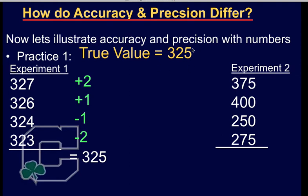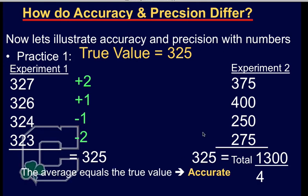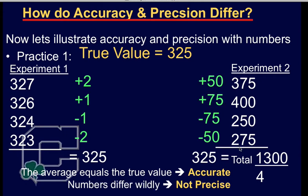But if I did this experiment a second time and I got these numbers, look how far apart these numbers are. Oh my gosh. There's no way those are accurate. But if I add them together and then divide by four, my total still equals the true value. So since the average equals the true value, those are actually accurate numbers. But the problem is they're not precise because of how far apart they are. These ones are precise because they're all clumped together. These ones are not precise because of how far apart they are. Now, the difference in precision and how far away you can be really depends on the size of your numbers and what you're actually measuring.